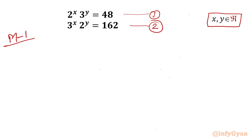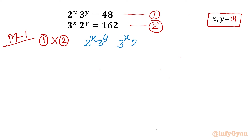Let's get started. For Method 1, I will perform operation 1 times 2 — multiplying both equations. So I multiply LHS with LHS and RHS with RHS. I write 2^x · 3^y times 3^x · 2^y on the left side, which I rearrange as 2^x · 2^y times 3^x · 3^y. RHS is 48 times 162.